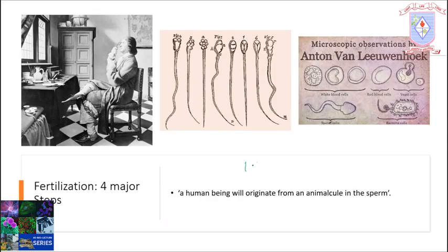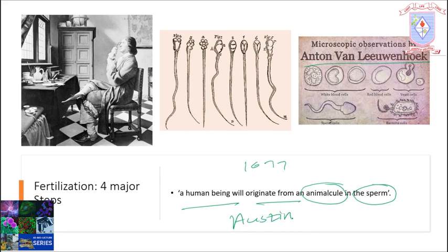In 1677, Anthony Van Leeuwenhoek observed the human sperm through a primitive microscope and wrote, 'a human being will originate from an animal killed in the sperm.' He got it half right. Roughly three centuries later, Austin and Chan first described requirements necessary for sperm to fertilize the oocyte. They independently concluded that the capacity of sperm for fertilization — i.e., capacitation — was acquired only after a period of residence in the female reproductive tract, in the case of mammals or higher animals.